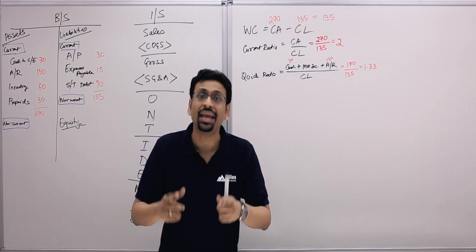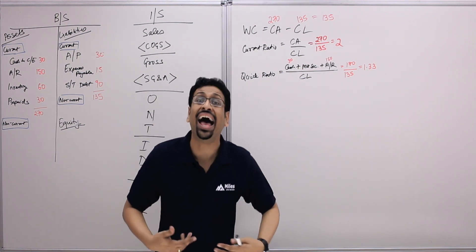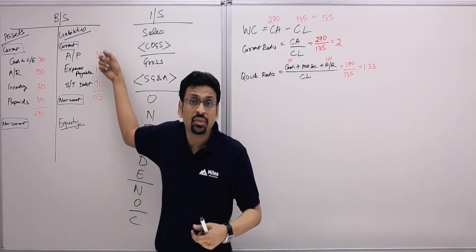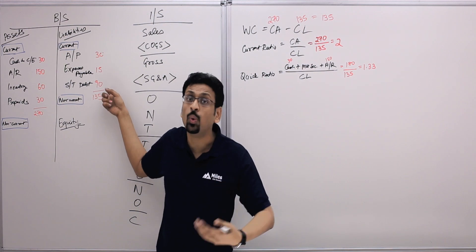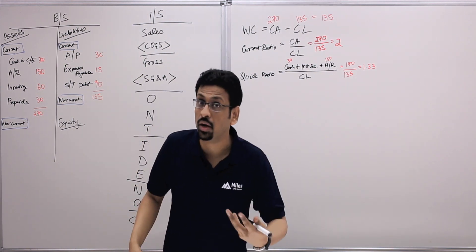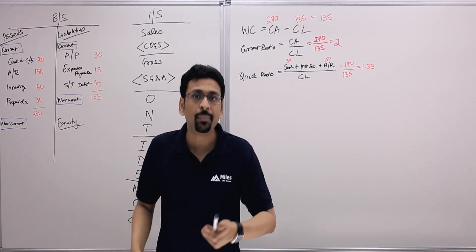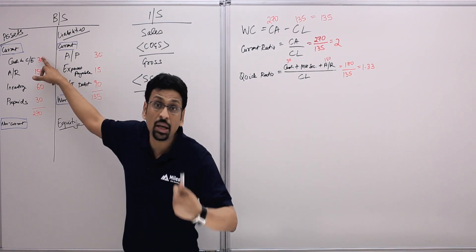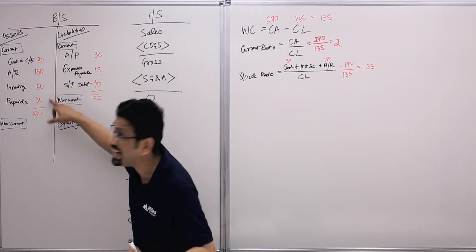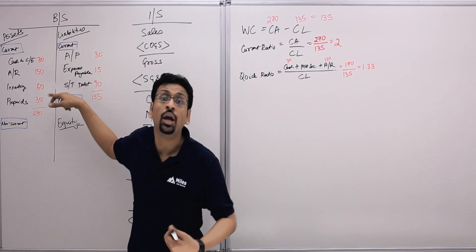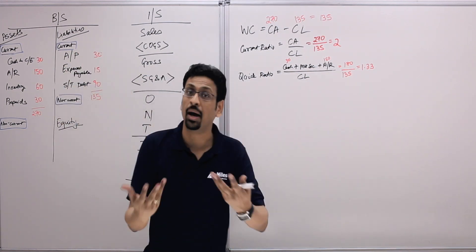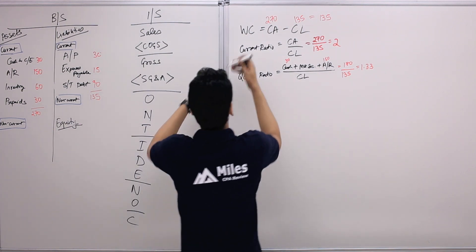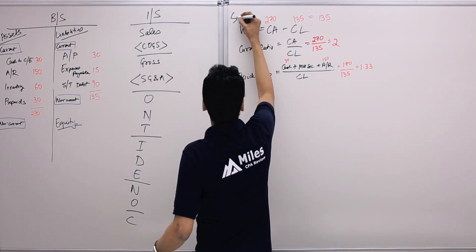These ratios are often called solvency ratios. They help you check whether the business has enough cash to pay its debts as they come due. Current liabilities become due within one year — so does the business have enough cash or the ability to generate enough cash to pay these liabilities as they come due?